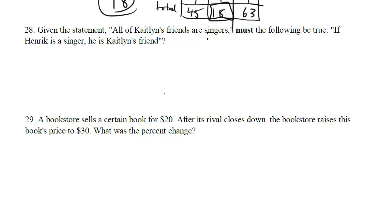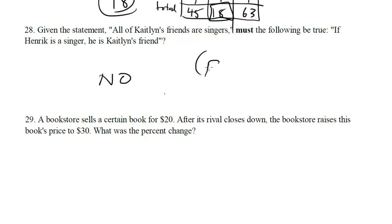Question 28: Given the statement 'all of Caitlyn's friends are singers,' must the following be true: if Henrik is a singer, he is Caitlyn's friend? The statement tells us all of Caitlyn's friends are singers, but it doesn't necessarily mean all singers are Caitlyn's friends. Henrik could be Caitlyn's friend, but he doesn't have to be. The converse is not necessarily true. The answer is no — and we say 'no' rather than 'false' because it could be true, but it doesn't have to be. This is a must-be-true question.